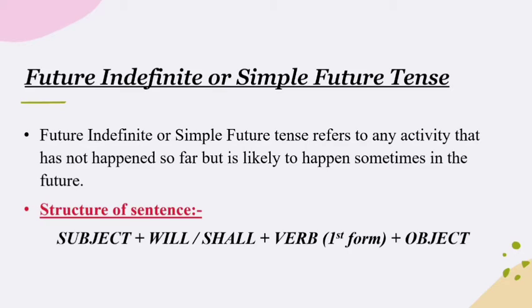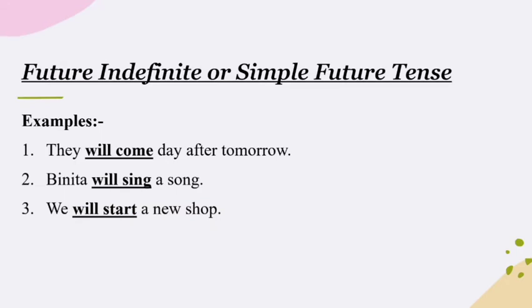The basic structure of a sentence in Future Indefinite Tense or Simple Future Tense is: Subject + will or shall + Verb 1 (the first/present form of the verb) + Object. For example, 'Binita will sing a song' — where Binita is the subject, followed by 'will', then V1 which is 'sing', and then the object which is 'a song'.